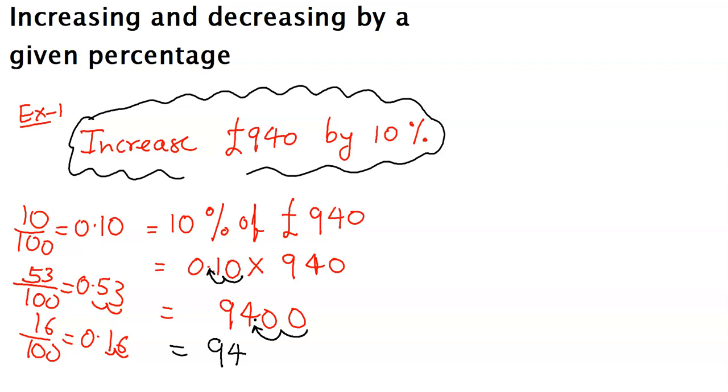Now, this means this number we need to increase. So 940 we already had and you are adding 94 to this. 940 plus 94, how much will it be? 1034. So see, from 940, if you add 10 percent, you are adding 94 to it.